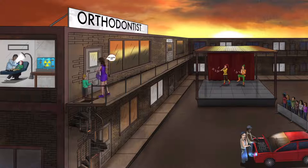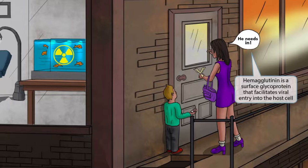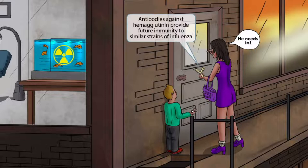As he's working on one patient, he hears a knock on the entrance from a concerned mother. Notice that the mother is pounding on the door and saying, 'he needs in,' because the child just got his tooth knocked out. The phrase 'he needs in' sounds like hemagglutinin, which should help you remember that influenza virus produces glycoproteins present on the surface of the virus that facilitate viral entry into the host cell. The mother knocking on the entrance represents viral entry, and the door knocker is shaped like an antibody, representing the fact that antibodies can be formed against hemagglutinin.